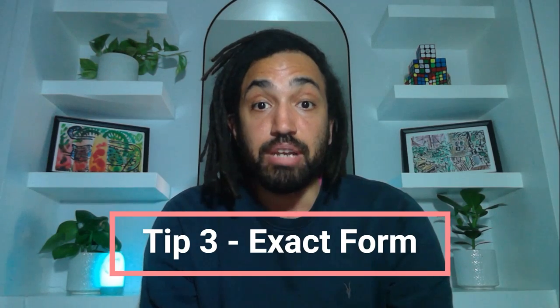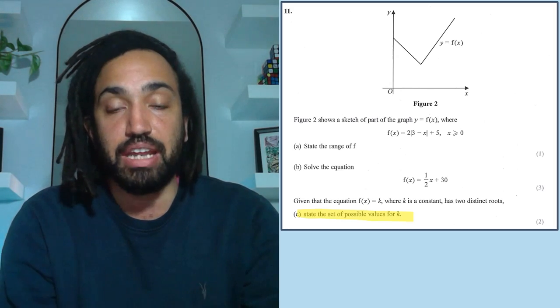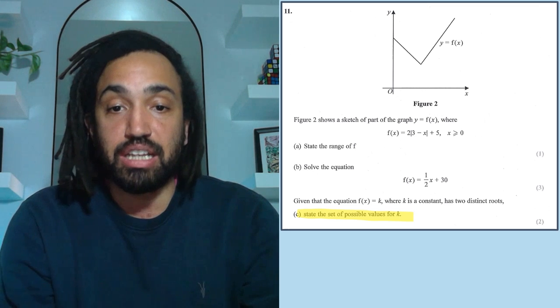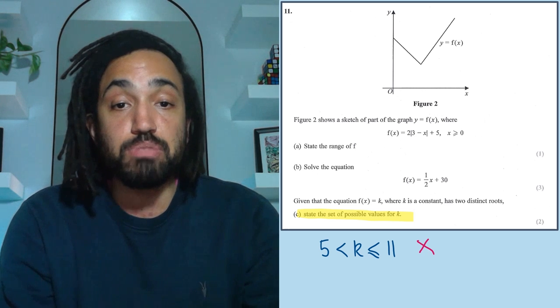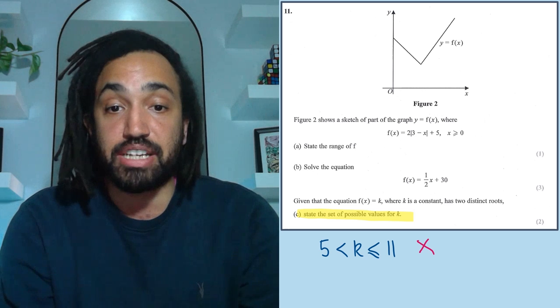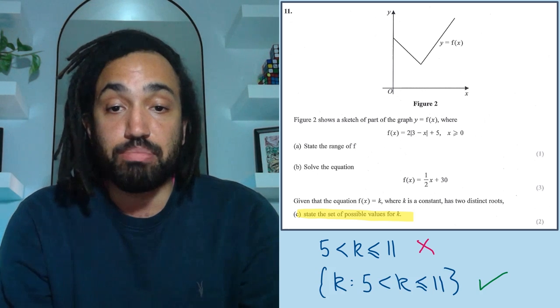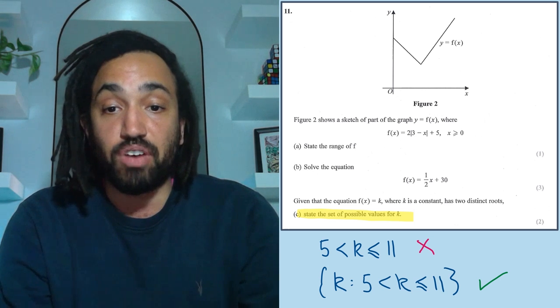Tip number three, make sure that you give your answer in the exact form that the question asks for. So this question here, it says state the set of possible values of K. And if I give my answer as an inequality, such that K is between 5 and 11, then I'm going to lose my final accuracy mark because it's asked for the set. So I have to give my answer in set notation. So I open up curly brackets, I write K, colon, and then I write that K is between 5 and 11.